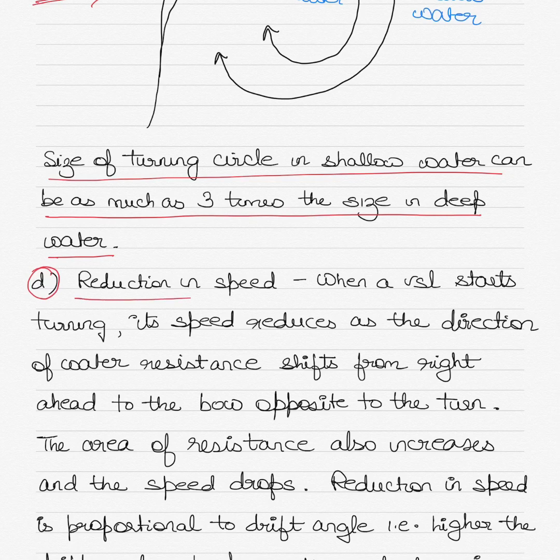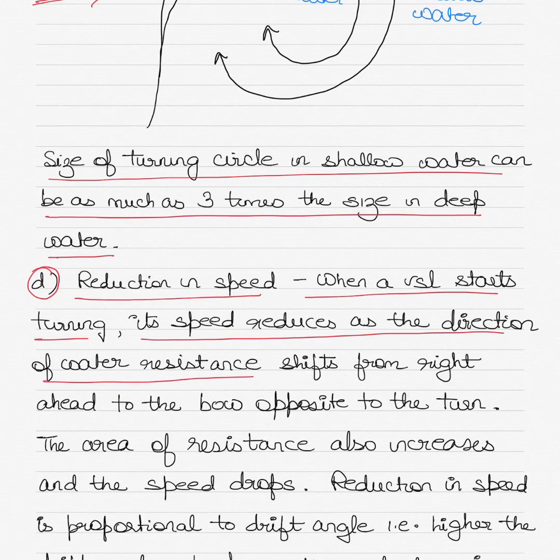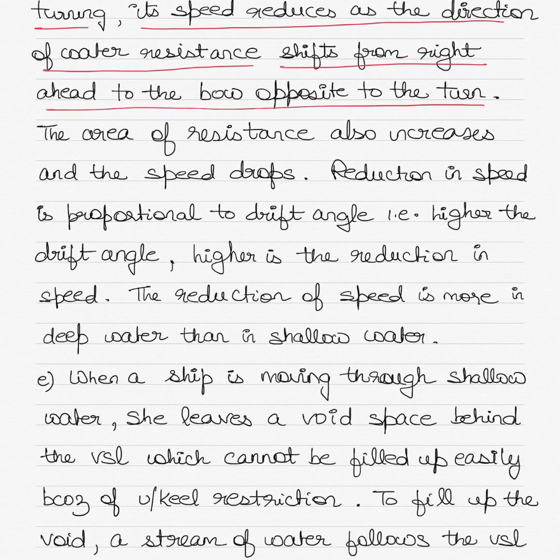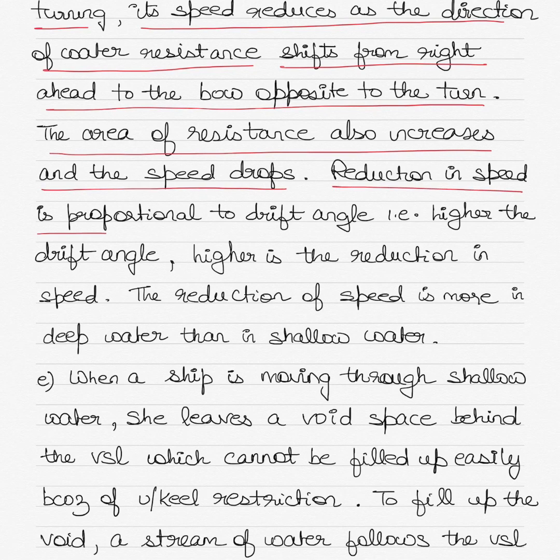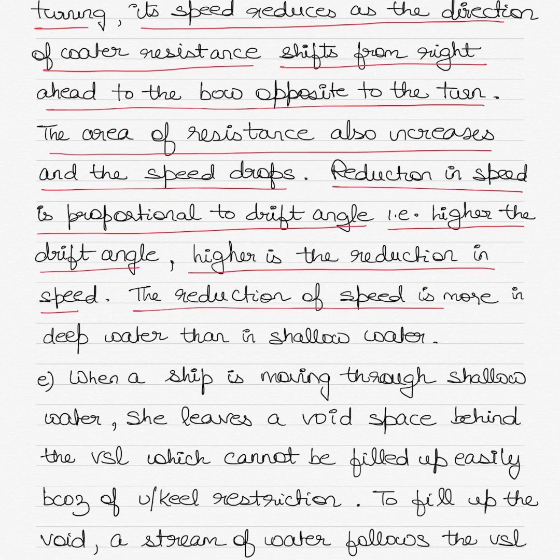Number four, reduction in speed. When a vessel starts turning, its speed reduces as the direction of water resistance shifts from right ahead to the bow opposite to the turn. The area of resistance also increases as the speed drops. Reduction in speed is proportional to drift angle. Higher the drift angle, higher is the reduction in speed. The reduction of speed is more in deep water than in shallow water.